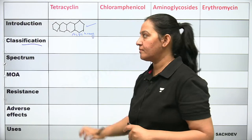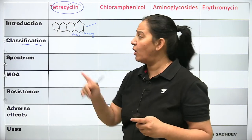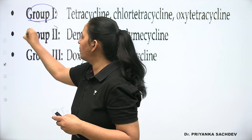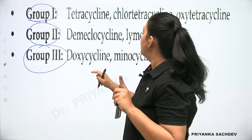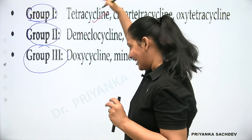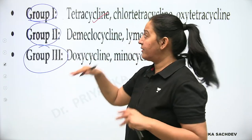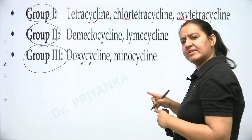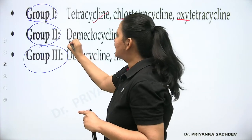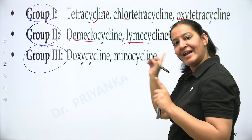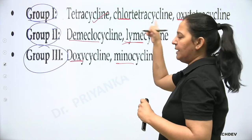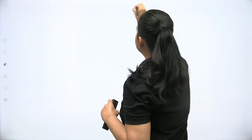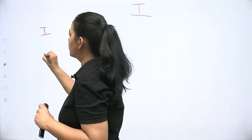Comparing the four antibiotics: tetracycline acts on 30S; chloramphenicol acts on 50S; aminoglycoside acts on both 30S and 50S; erythromycin acts on 50S. Regarding bactericidal vs. bacteriostatic: all four are bacteriostatic except aminoglycoside, which can be bactericidal as well. In terms of the step inhibited: tetracycline inhibits A window (Step 2); chloramphenicol inhibits P to A shift (Step 3); aminoglycoside inhibits P window (Step 1); erythromycin inhibits A to P shift (Step 4).